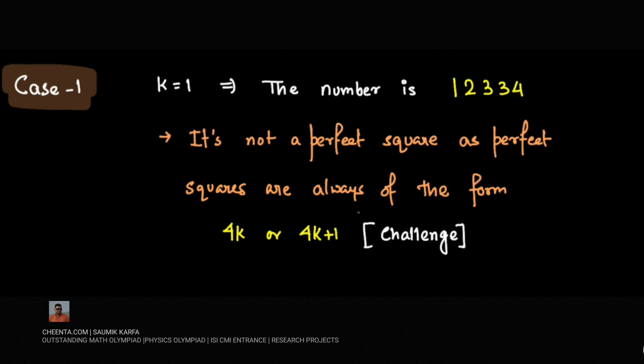Now why this is true will be a challenge for our viewers. We can see this number is not 4k, as it's not divisible by 4 because 34 should be divisible by 4. It's also not 4k+1 because if you subtract 1, you get 12333, which is again not divisible by 4. So this case is not valid.